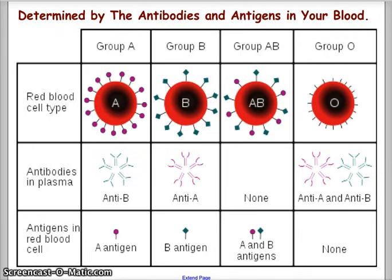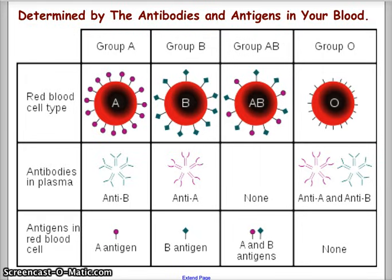What blood type you have is determined by the antibodies and antigens in your blood. If you have Group A blood, that means you have anti-B antibodies and pro-A antigens — recognizable in the diagram of the red blood cell with the little purple circles around the cell. If you have B type blood, you have anti-A antibodies and B antigens surrounding the blood cell. If you have AB blood, you have both A and B antigens and no antibodies, so you will not repel A or B type blood.